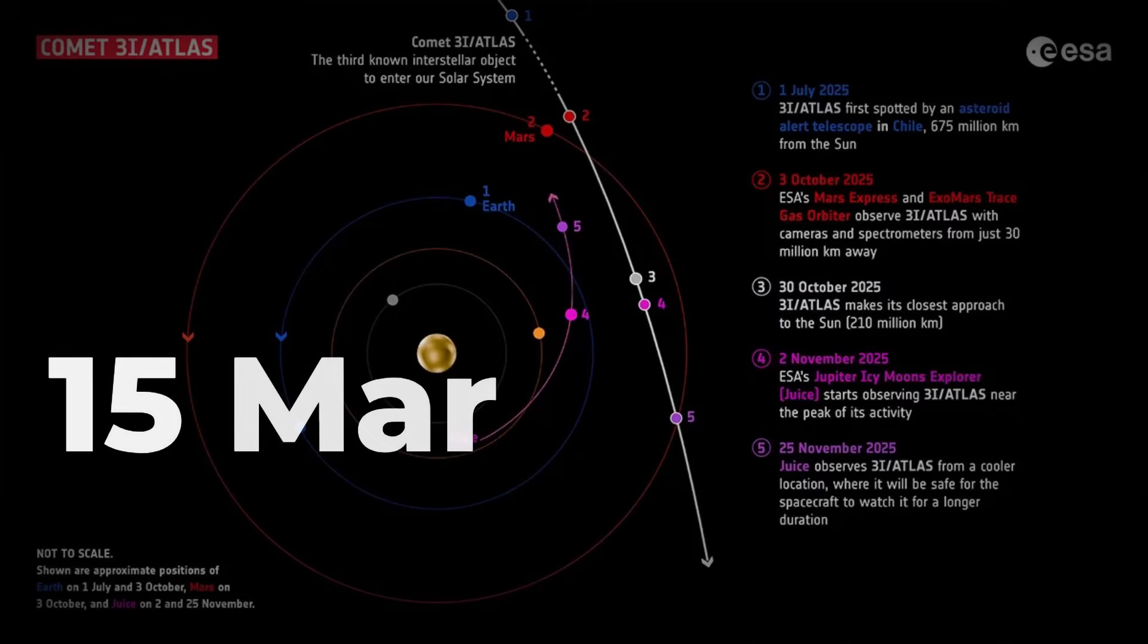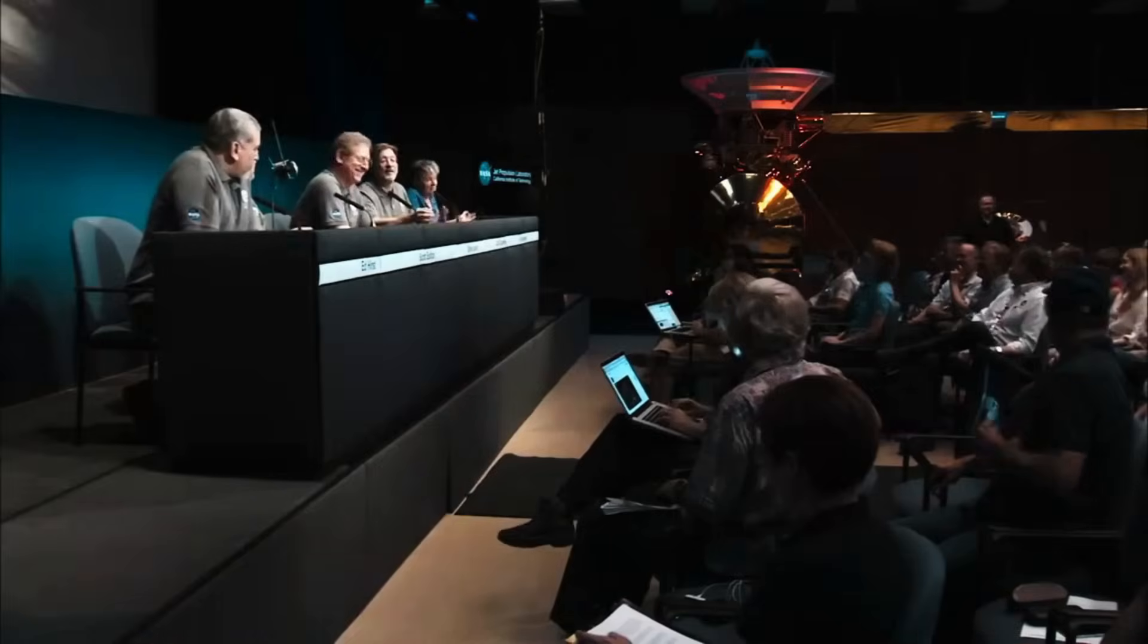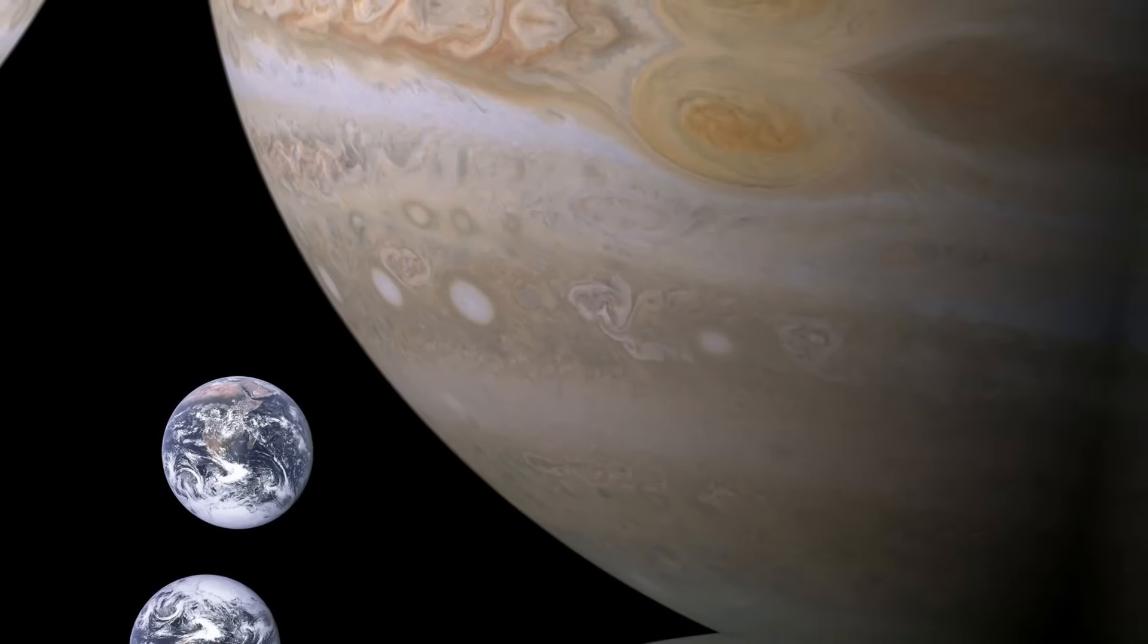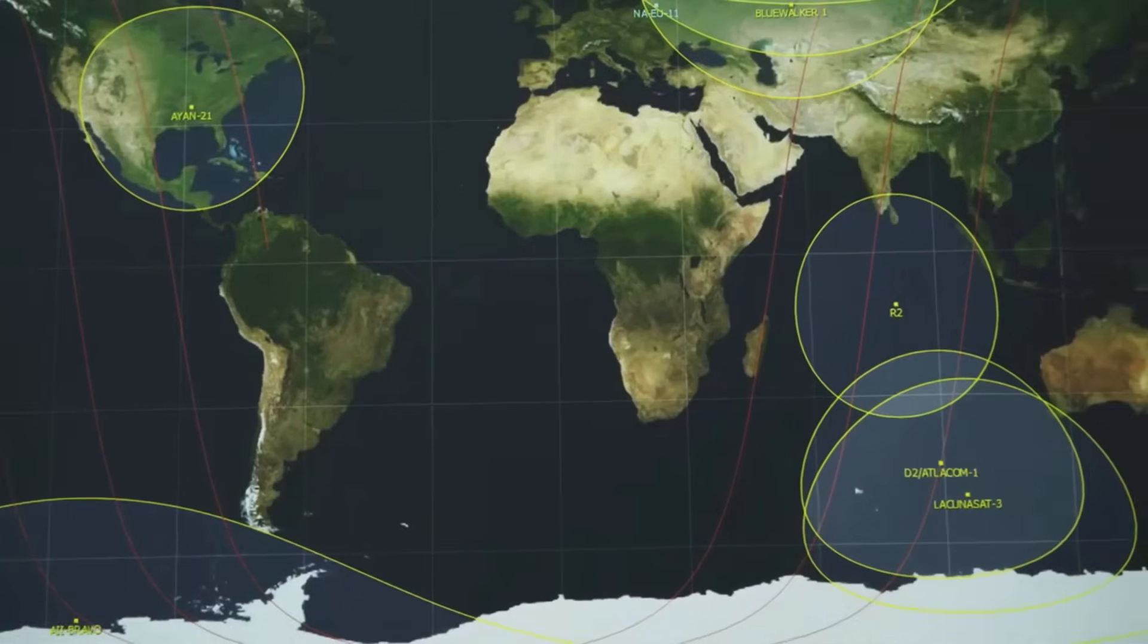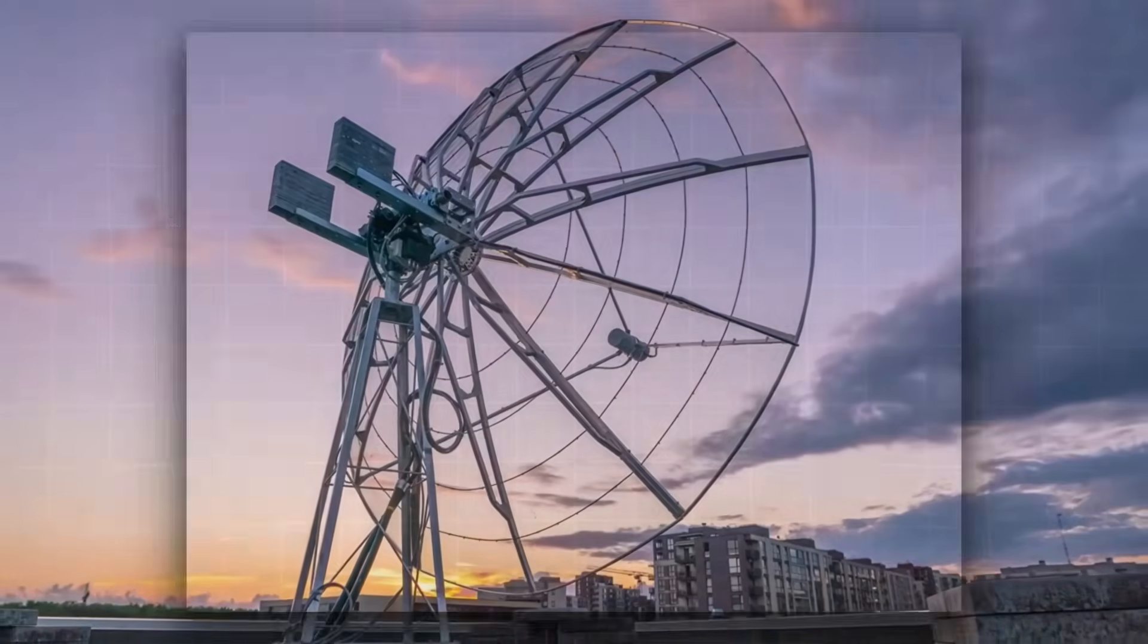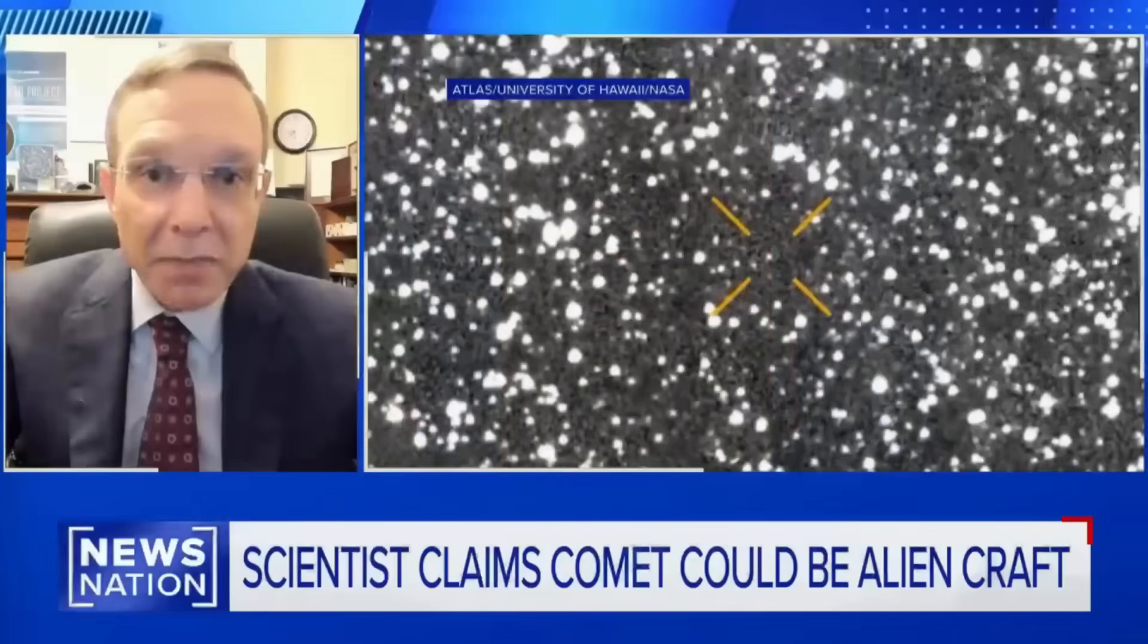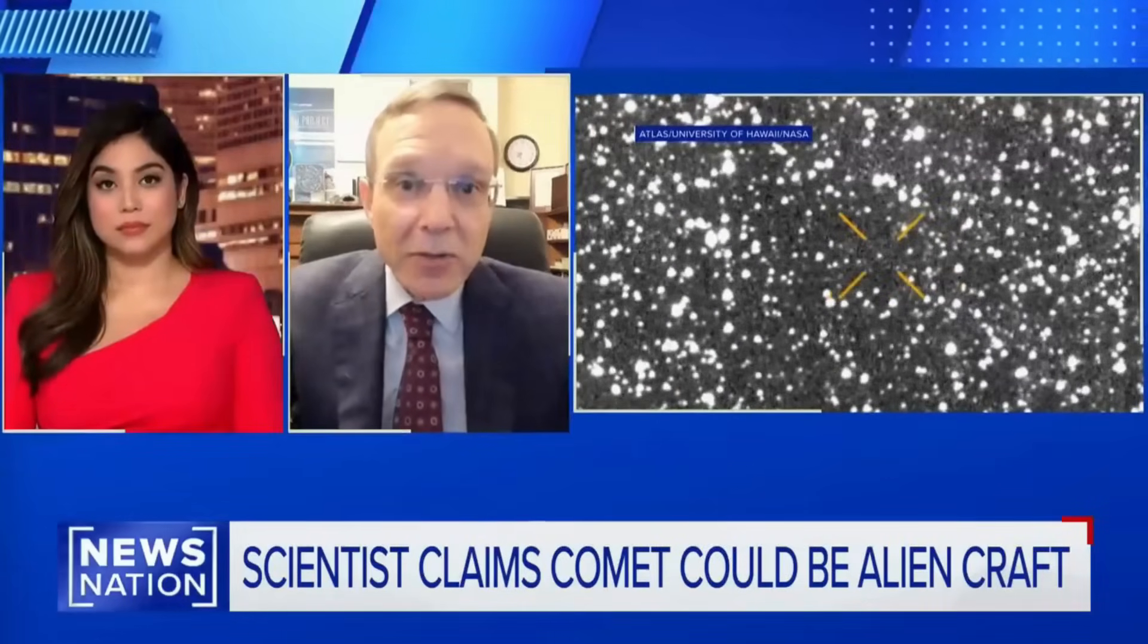The third checkpoint comes in March 2026, as 3i-Atlas passes near Jupiter. Current models predict a flyby at about 0.78 astronomical units from the giant planet. While not a close call by planetary standards, this encounter lets scientists test for gravitational deflection and monitor for any trajectory change. Each of these dates serves as a concrete milestone—clear, measurable moments when the world will know if 3i-Atlas continues to play by the rules of nature or if something new is at work.